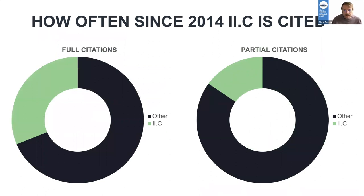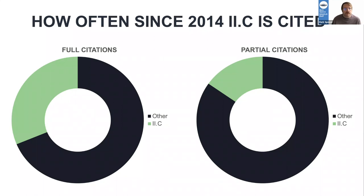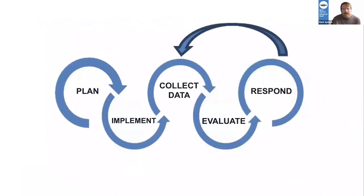Looking at our frequency of standard citations document, of all full citations the Board of Directors has voted on since 2014, Standard 2C is cited about a third of the time. For all partial citations since 2014, Standard 2C is cited about a quarter of the time. Considering we have eight full standards and sub-standards for each section, this is a significant point of citation for programs going through our process.